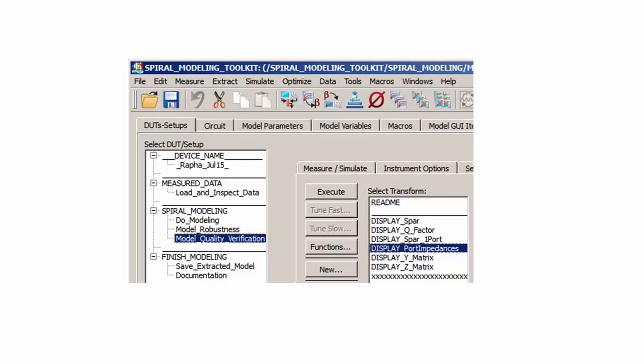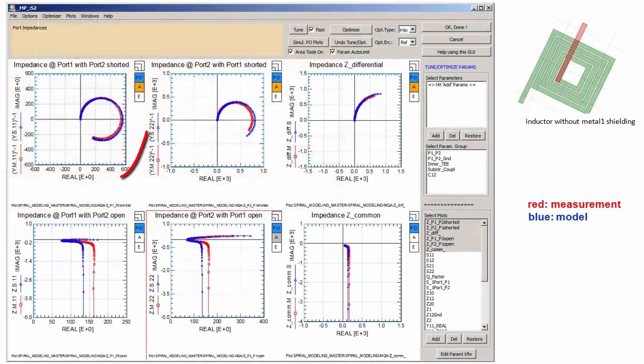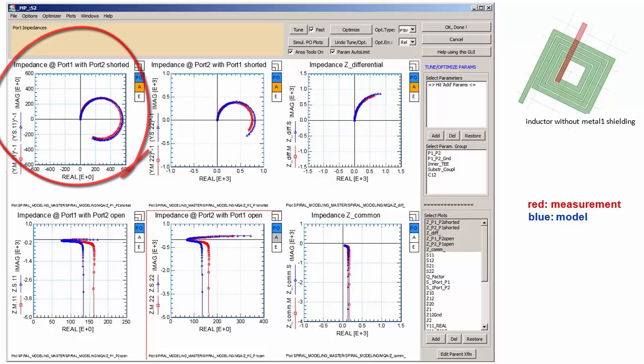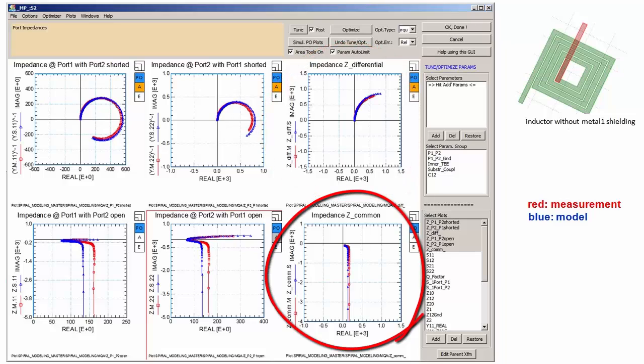I select Model Quality Verification in the IC-CAP project. Among other tests, I select the item Display Port Impedances, which shows port 1 with port 2 shorted and port 2 open. Then the opposite, looking into port 2 with port 1 shorted and open. And finally the impedance between the ports for differential and common mode excitation.